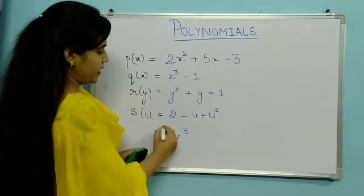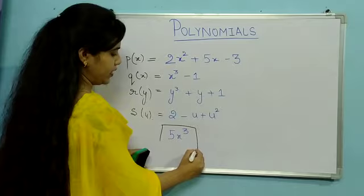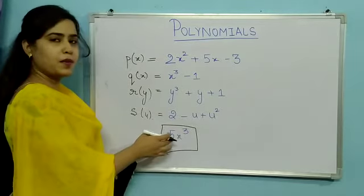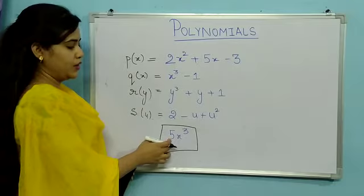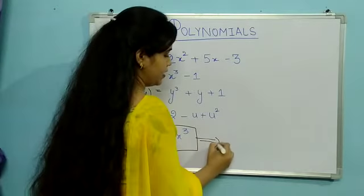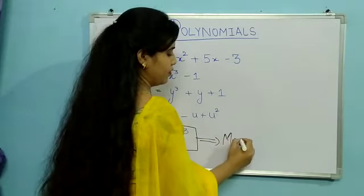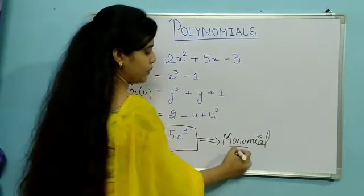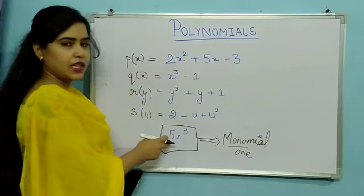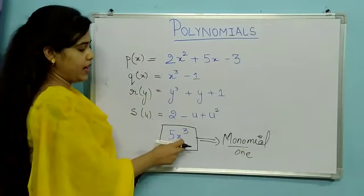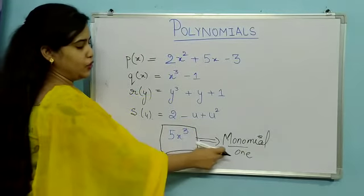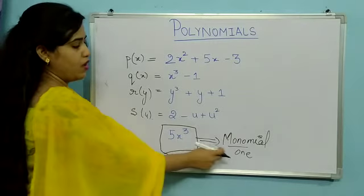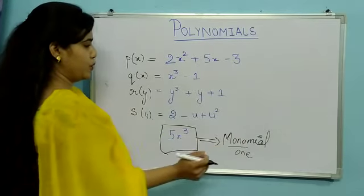When we have one term variable here, we will call it a monomial. Monomial means one. Here we have a single term — only one is five and one is x. So when we have a single-term polynomial, we will call it a monomial.